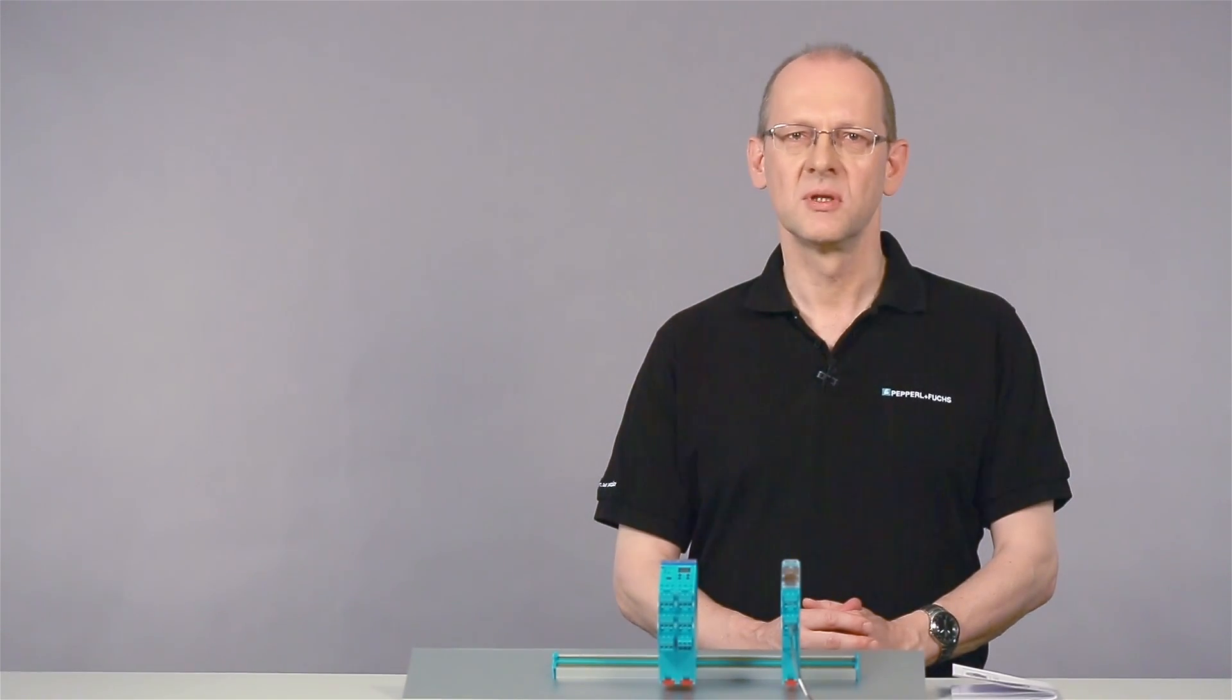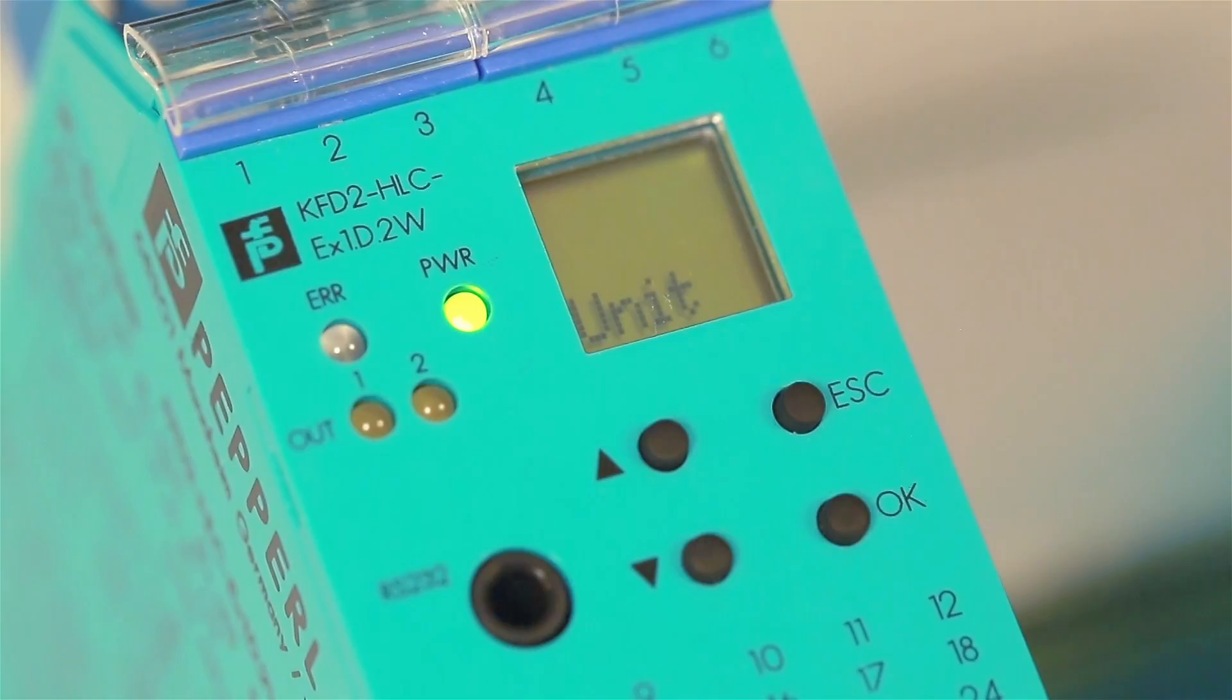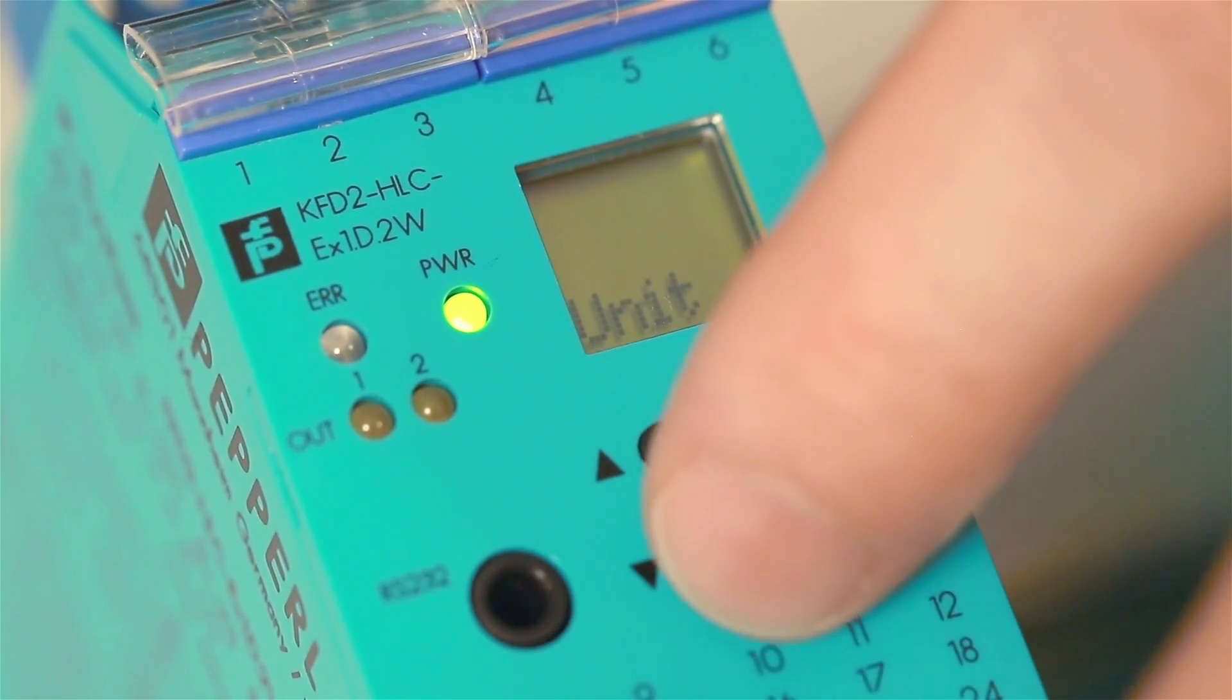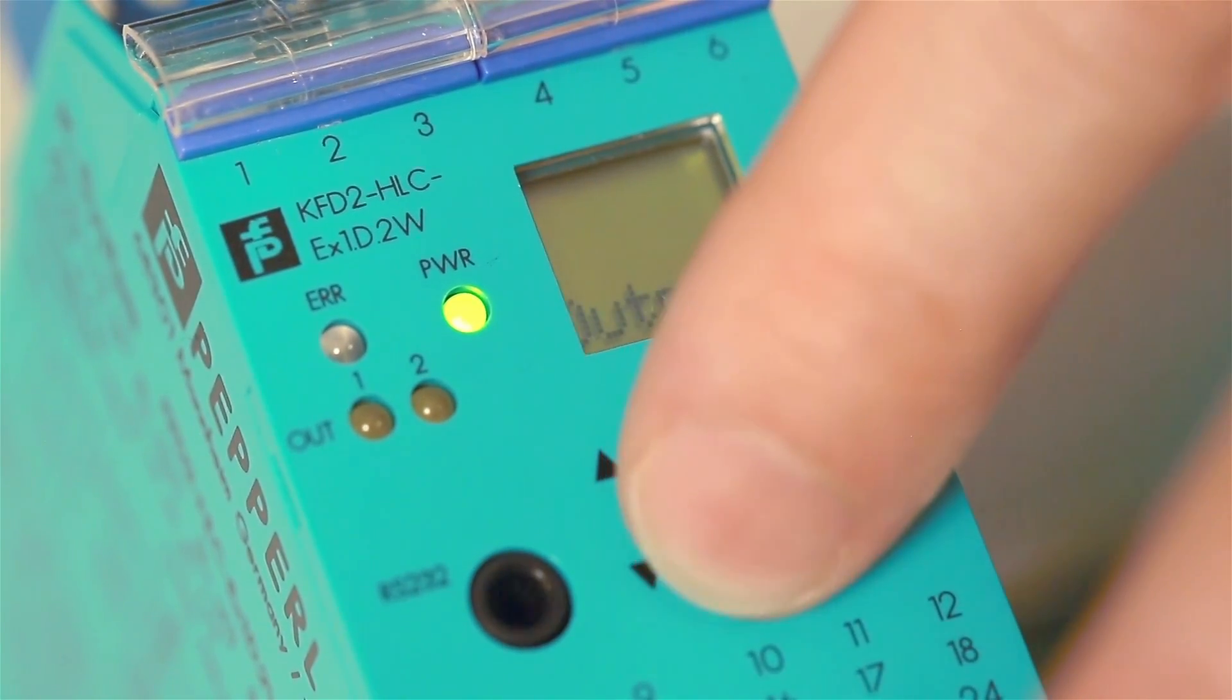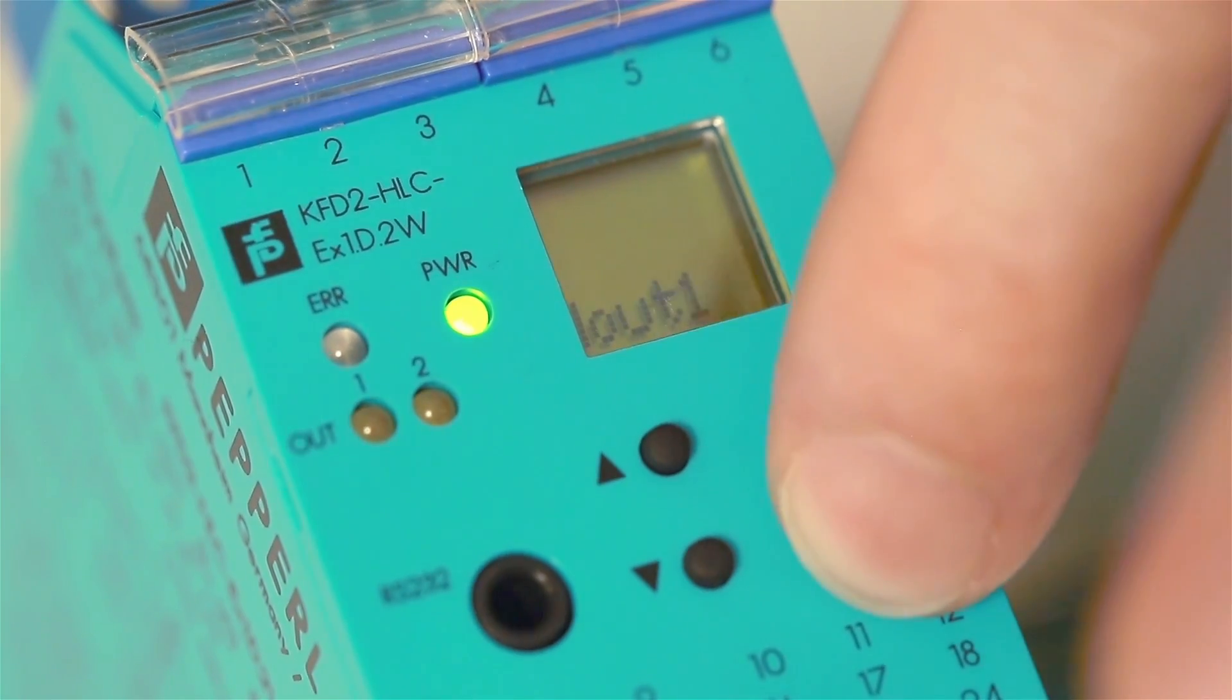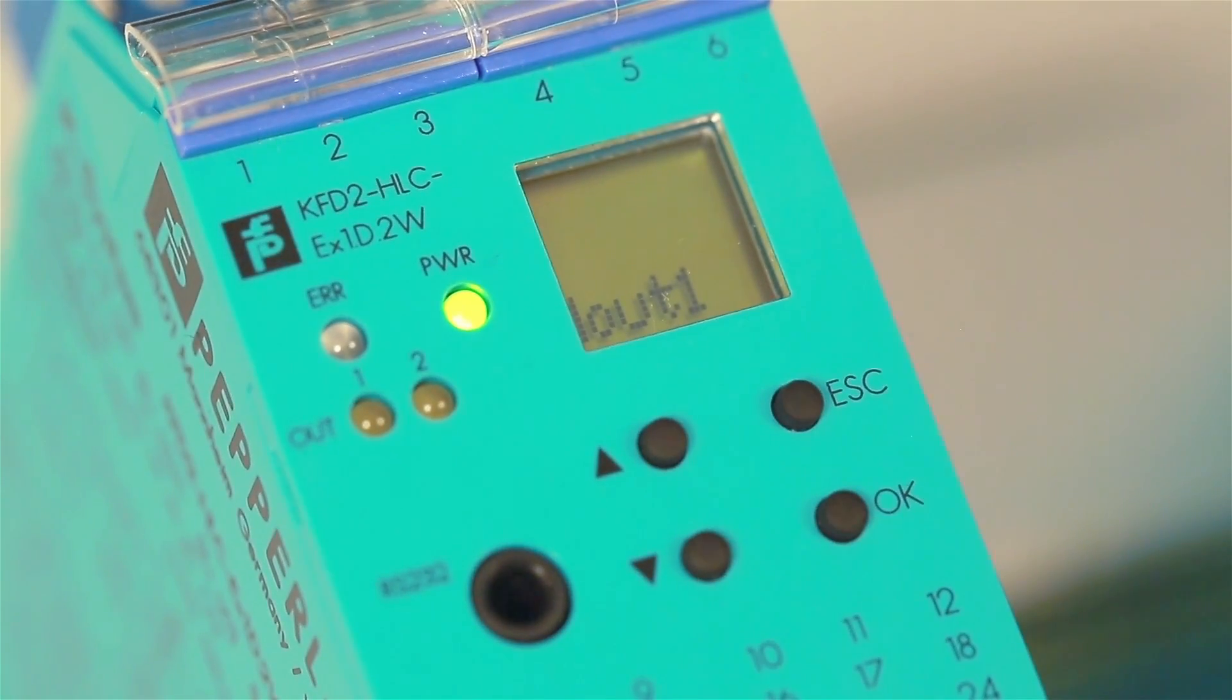In our test arrangement, we will parameterize output number 3 as an example. For this, navigate to menu item output within the parameterization mode. After confirming with OK, the corresponding submenu opens.